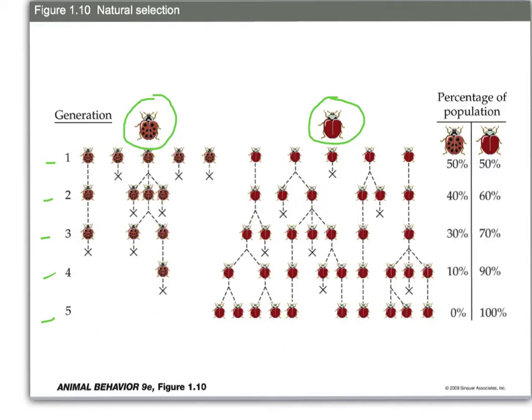And then the ones that are plain are for some reason not seen by the predators. Again, this is an imaginary example. And they're not only surviving better, but they're reproducing more. So over here is really the kicker because what we've started with was a 50-50 percentage of spotted to not spotted. And then we see it goes from 40-60, 30-70, 10-90 to finally zero.